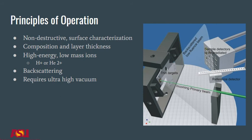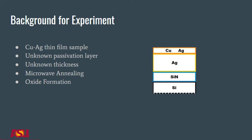For this experiment, we grew a copper-silver thin film sample deposited on an unknown passivation layer on a silicon wafer substrate. The samples were then annealed at varying times in a commercial microwave. This annealing should introduce oxidation of the copper-silver surface layer. We will be looking at how this layer changes as the annealing time increases.